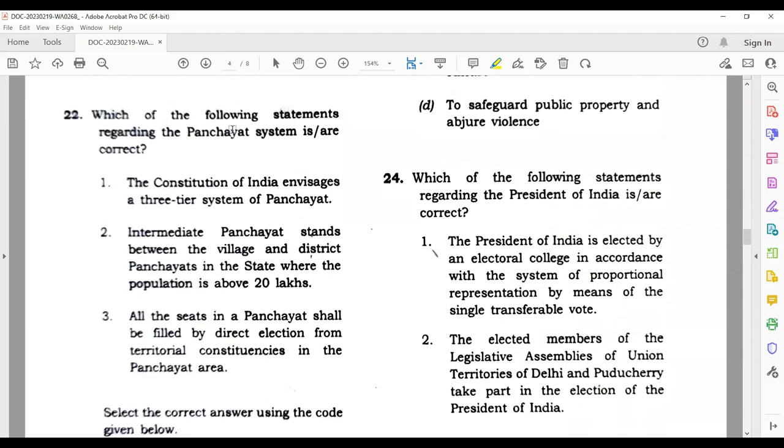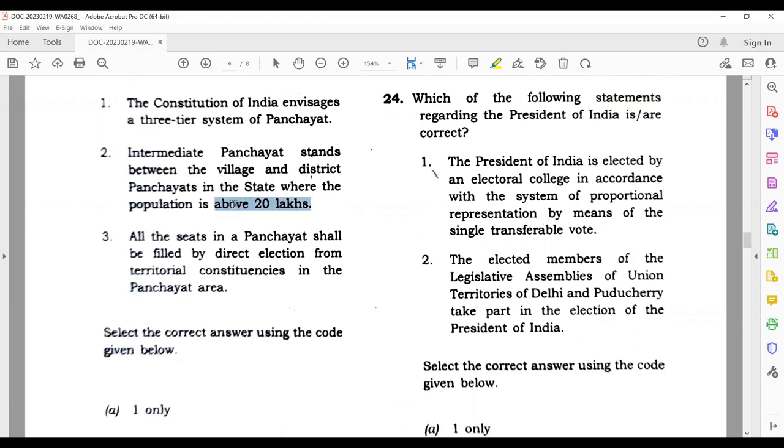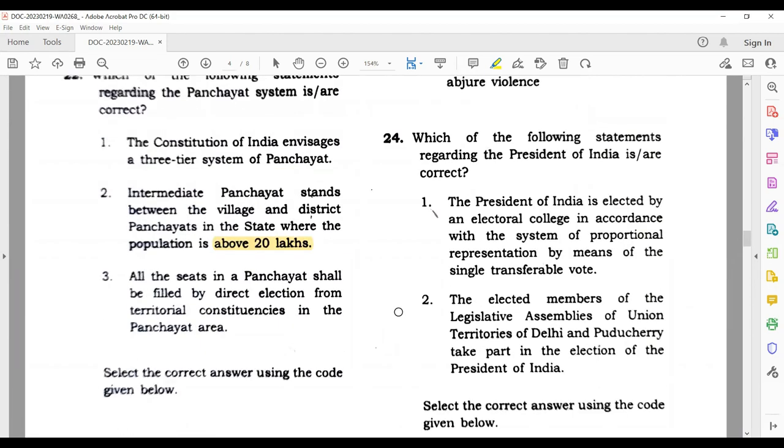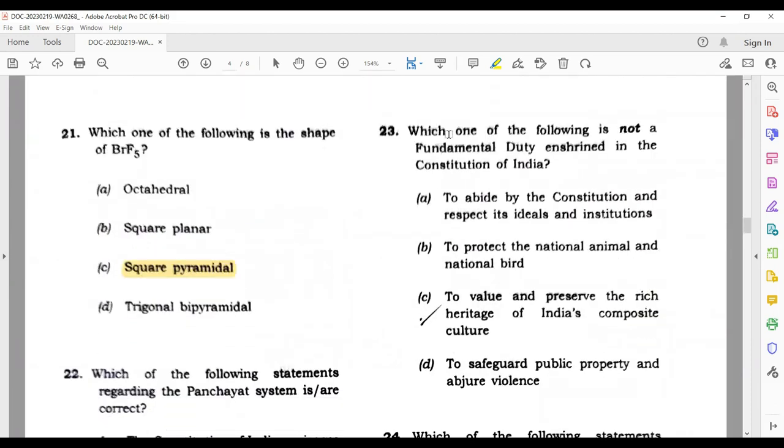Which one of the following is the shape of BeF5? Square pyramidal. Now this question: which of the following statements regarding the Panchayat system are correct? The Constitution of India envisages a three-tier system of Panchayat - intermediate Panchayat stands between the village and district Panchayat in states where the population is above 20 lakhs. This 20 lakh statement is not correct, so the answer is 1 and 3 - option C is correct.